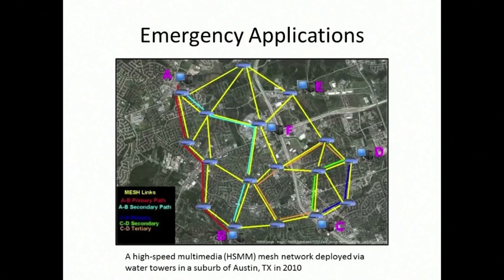In 2010, ham radio enthusiasts calling themselves the South Texas Balloon Launch Team utilized high-altitude balloons and water towers to deploy a mesh network of routers connected to the internet around a suburb of Austin, Texas. Applications such as these could prove very useful in emergency situations during which mesh networks could be relied upon to support basic telecommunications applications such as sending email and images between interconnected devices.